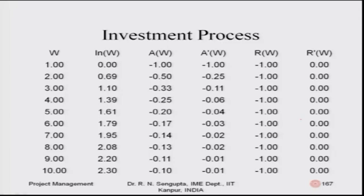I have purposefully skipped the column for u prime, which is d(ln w)/dw, and the fourth column which is also missing. I did this purposefully so that you can fill in u double prime in the next cell. Once you find u double prime, all the calculations follow — you can find out the values of a, a prime, r, and r prime, remembering that the calculation from a to r is simply multiplying the a value by w.